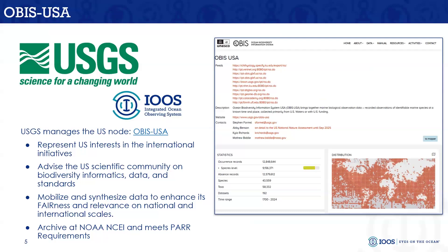OBIS USA is the US node to OBIS, managed through USGS by Steve Formel. I also support him in coming and talking to you all about standardizing and sharing data, as well as mobilizing data for some of our IOOS-related activities. This represents the US interest in international initiatives, and it also advises the US scientific community on biodiversity informatics, data, and standards. One of the big carrots for US-funded entities is that OBIS meets the PAR requirements — the public access to research results. So if you get federally funded, you're required to share your data, and OBIS meets those requirements. It also provides a mechanism to archive your data long-term at NOAA's National Center for Environmental Information, making your data available and publicly accessible for 75 years.